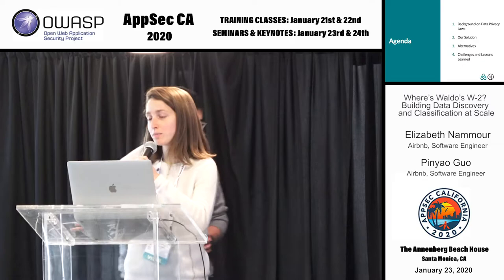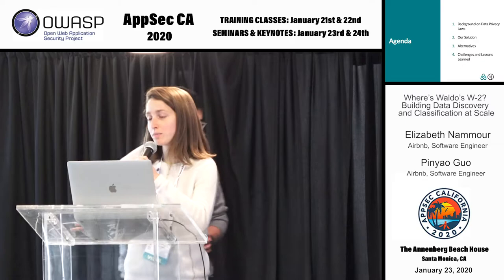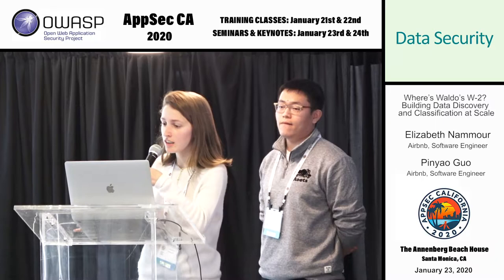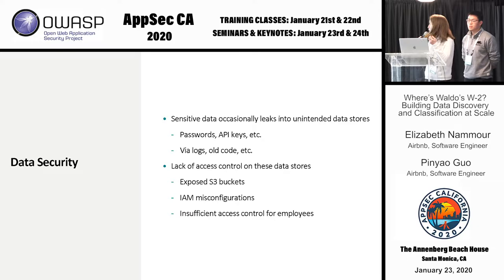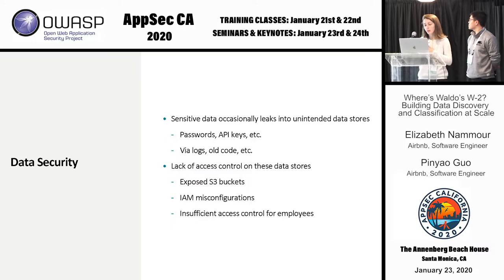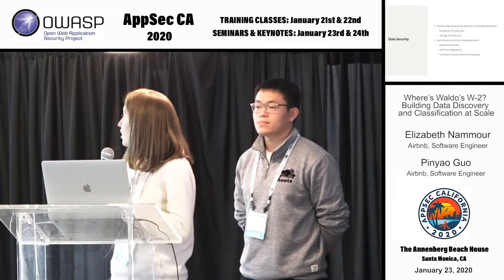There are two aspects of why we wanted to build such a data classification solution. One is because of data security. Sometimes sensitive data can leak into unintended data stores — passwords, API keys — via logs or old pieces of code that no one knows is there. These data stores sometimes don't have the proper access controls because no one knows that sensitive data is stored there. This could be an exposed S3 bucket, misconfigured IAM permissions, or insufficient access controls for employees.